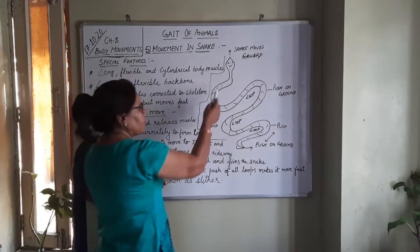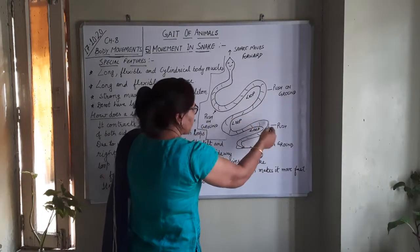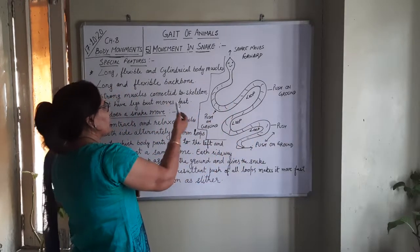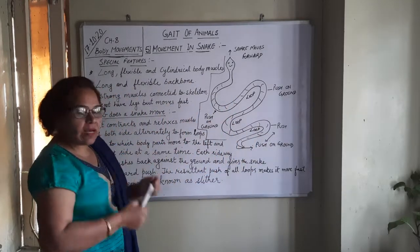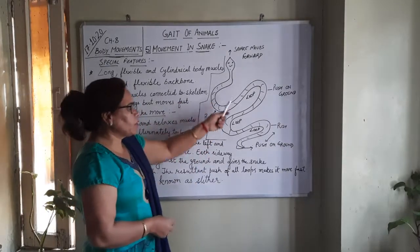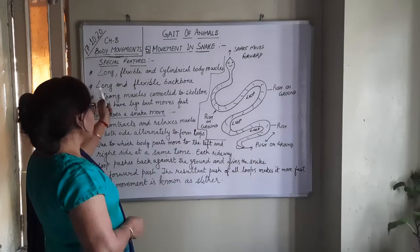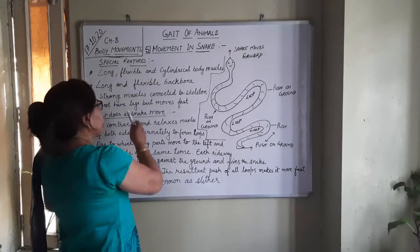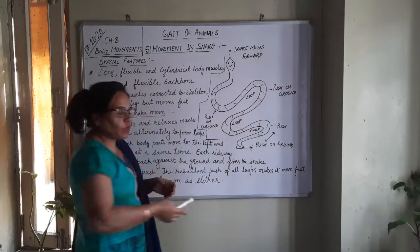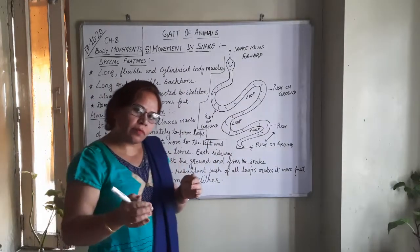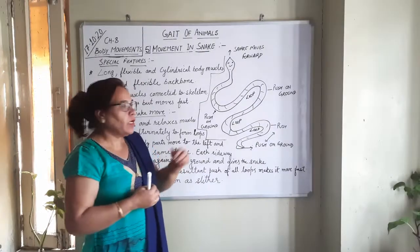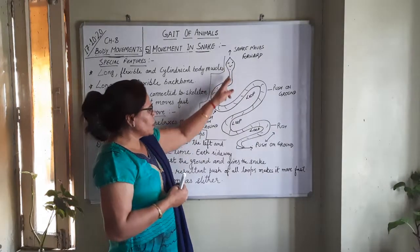First of all, you have observed that the snake's body is very long, cylindrical, and flexible, due to which it makes several curves. Another adaptive feature is that it has a long and flexible backbone inside. The backbone is very long and, similarly to our backbone, it is also a segmented one.